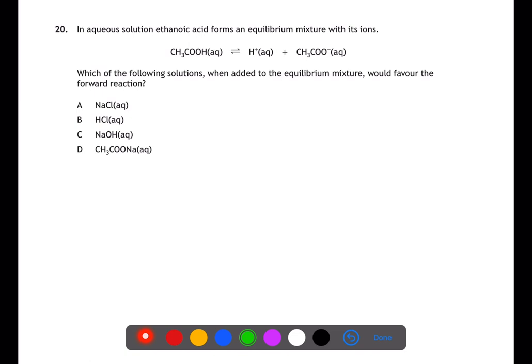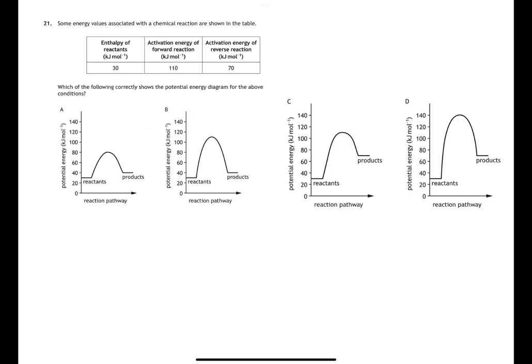Question twenty is looking at equilibrium. Adding NaCl would have no effect. Adding HCl adds H⁺ ions, which would push the equilibrium to the reactant side. Adding NaOH adds OH⁻ ions — these react with H⁺ ions, removing them and pushing the equilibrium to the product side. Adding sodium ethanoate adds ethanoate ions, pushing the equilibrium to the reactant side.